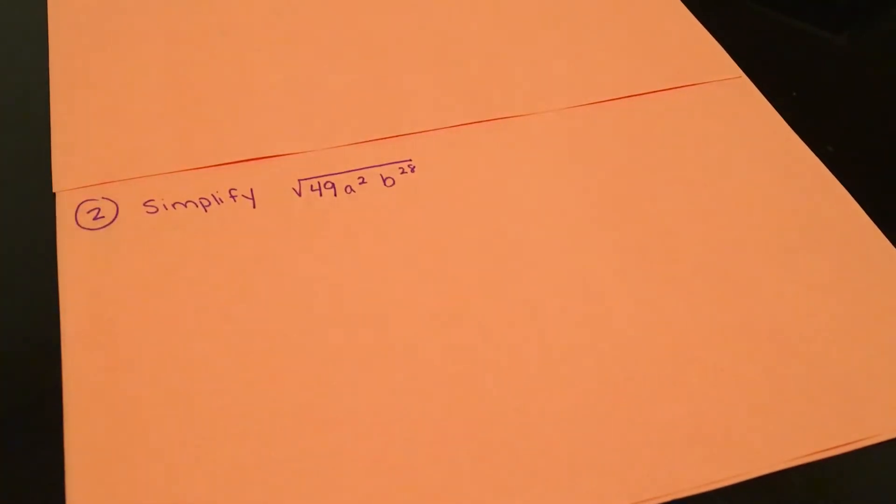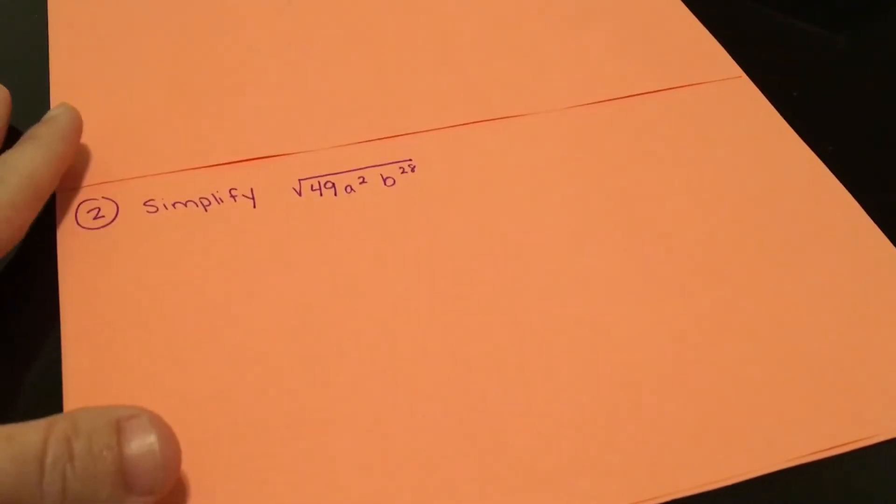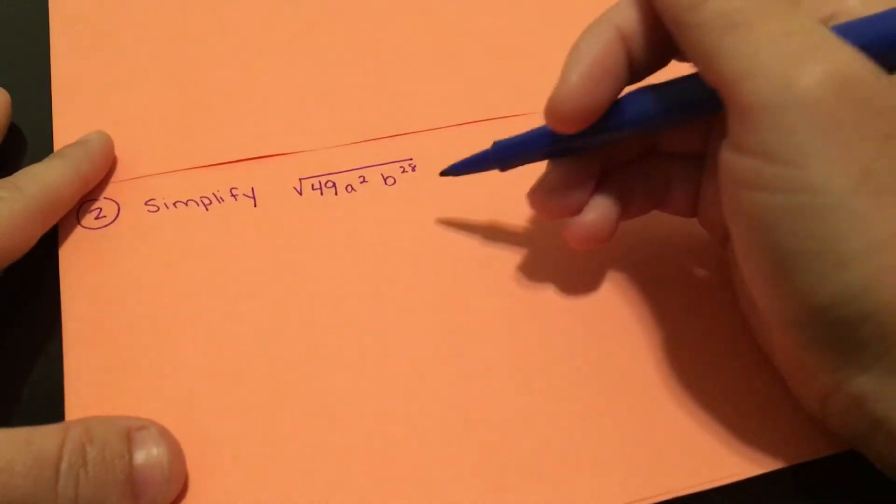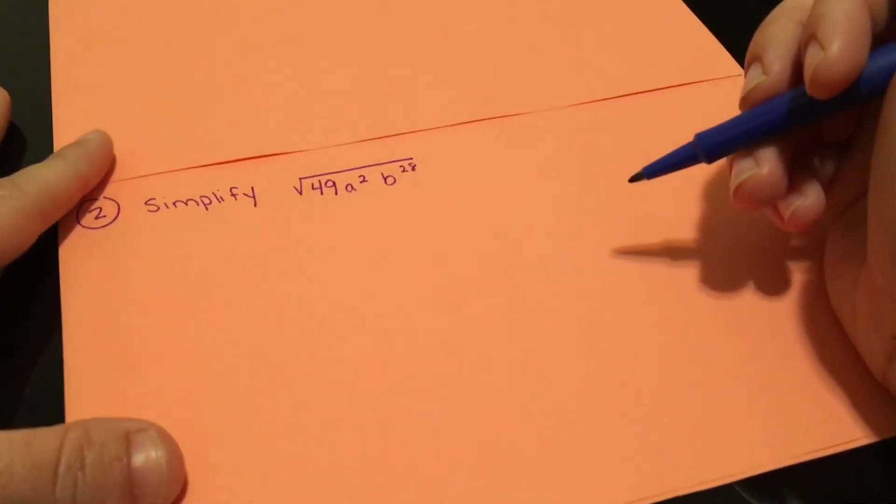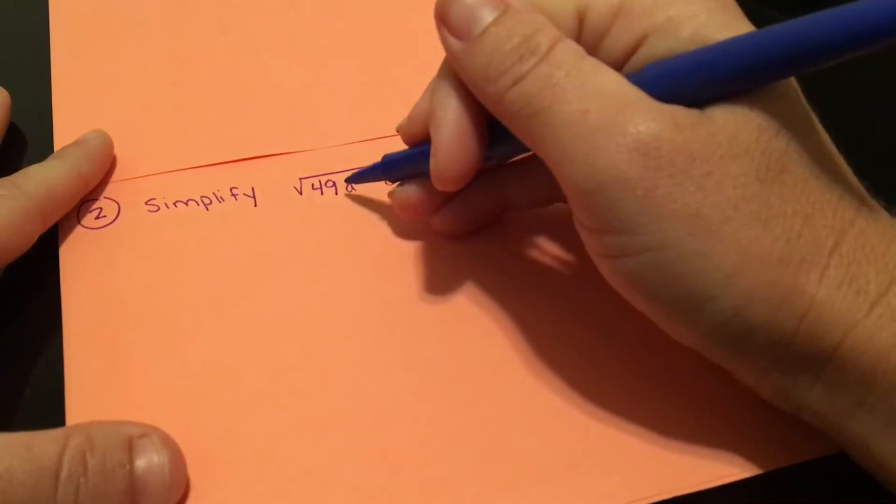In problem 2, we are simplifying 49a squared b to the 28th. So again, we're going to split this up. We have three terms here.